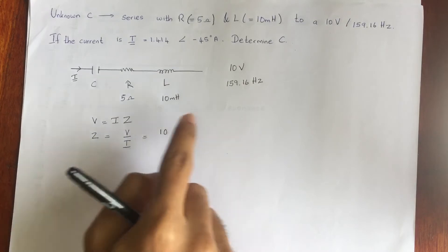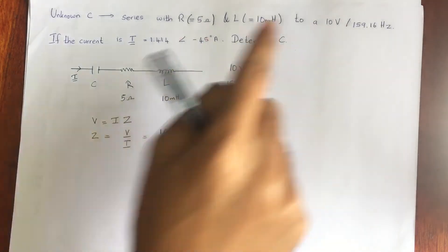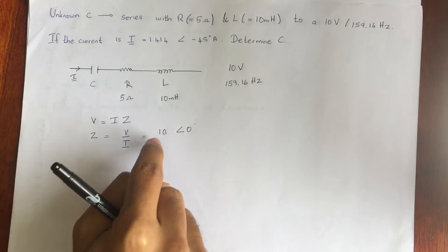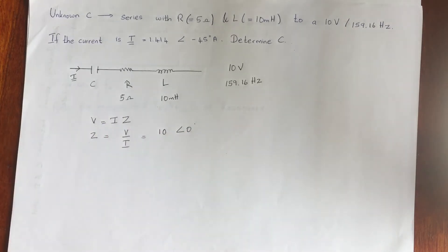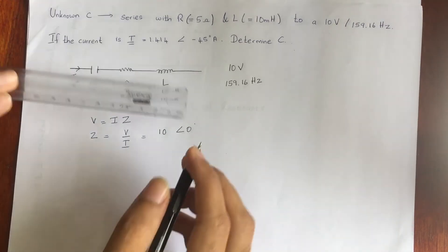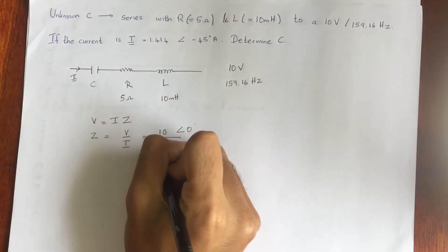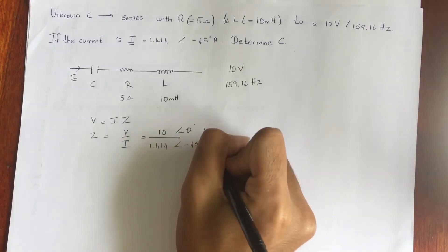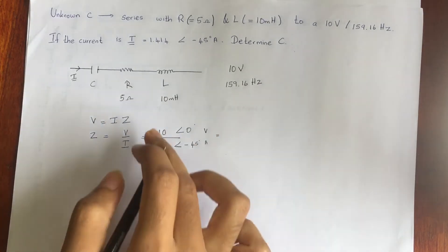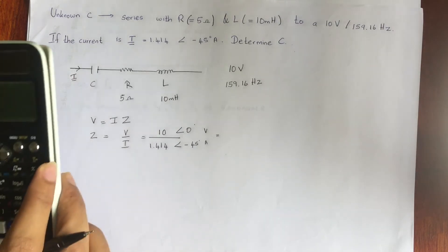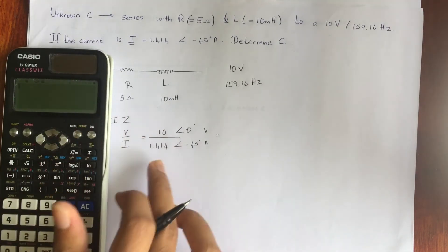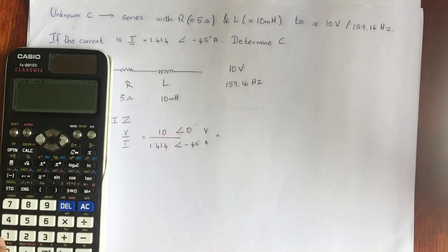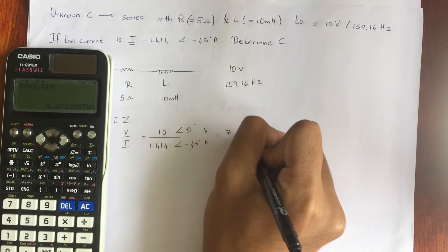Since they haven't mentioned a phase angle for the voltage, we write it as 10 at an angle of zero degrees. Then we divide by the current: 1.414 at an angle of minus 45 degrees. When dividing two polar numbers, we divide the magnitudes: 10 divided by 1.414 gives 7.07. For the angles, we subtract: 0 minus (minus 45) gives plus 45 degrees.